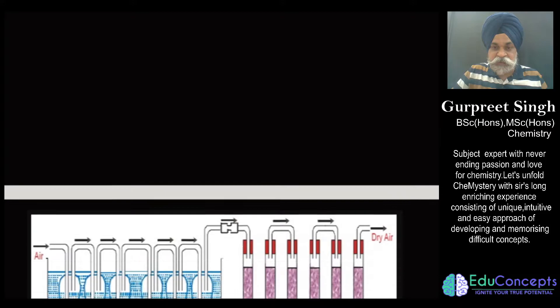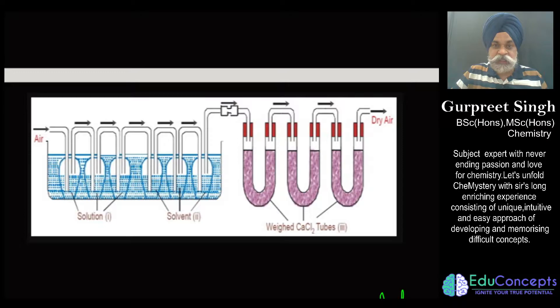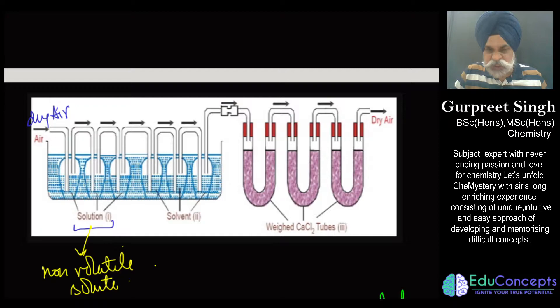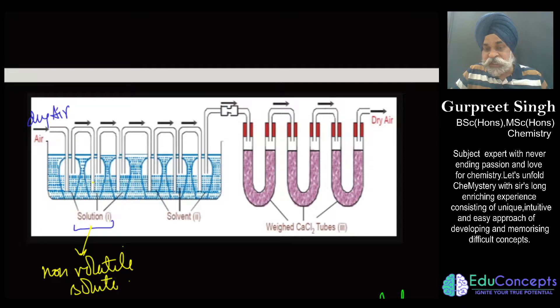I hope you have tried this question. Let me first explain what exactly it is, then we will take up the numerical part. In this particular case, the flowchart of the apparatus looks like this: from one side, you pass dry air into a vessel containing a solution. This solution contains a non-volatile solute dissolved in water. When dry air passes through this solution, it takes along some water vapors with it.